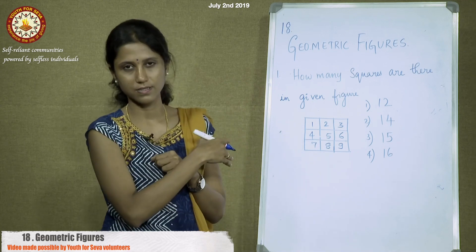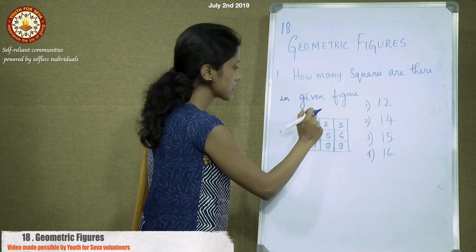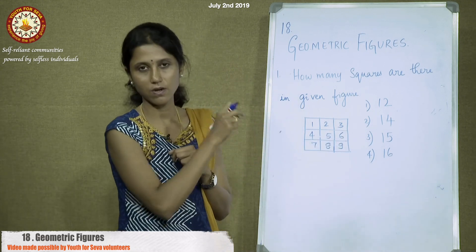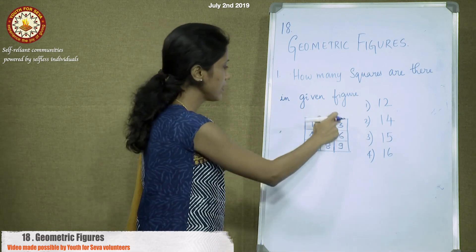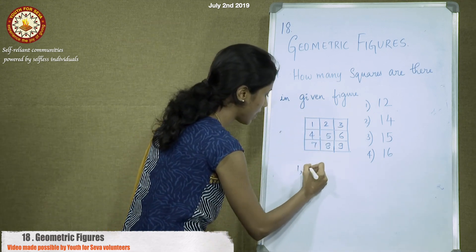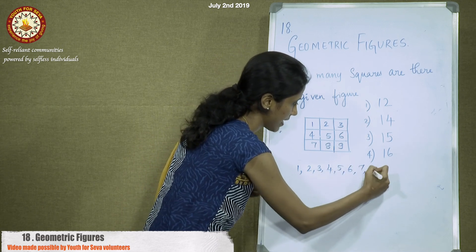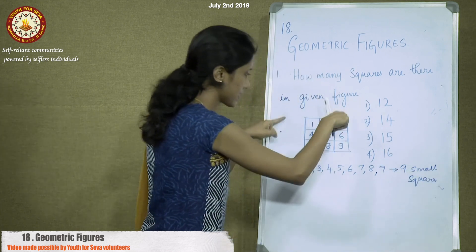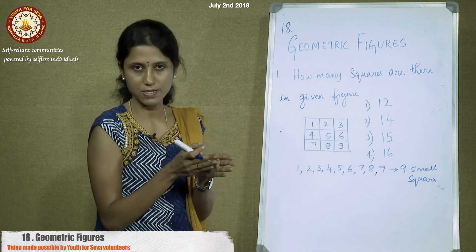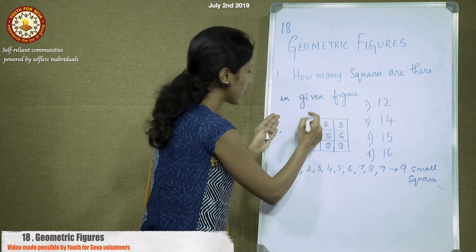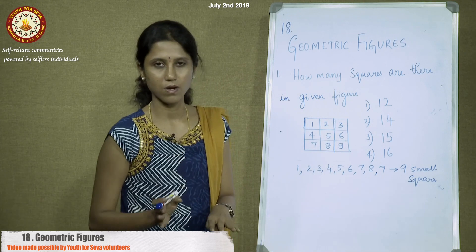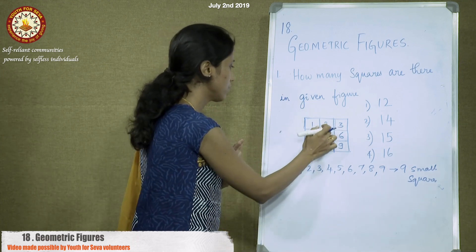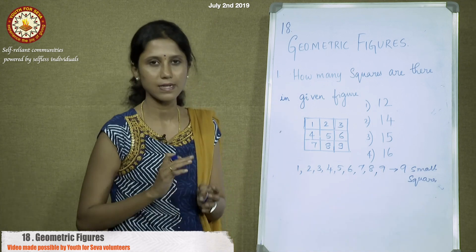We are looking for squares in the 3×3 grid. Each numbered part — 1, 2, 3, 4, 5, 6, 7, 8, 9 — is a small square, so totally 9 small squares. Now let me check by adding 2 partitions. If I consider 1 and 2 together, it is a rectangle, not a square. Similarly, combinations like 2 and 3, 3 and 6, 1 and 4, 4 and 7 are all rectangles, not squares.